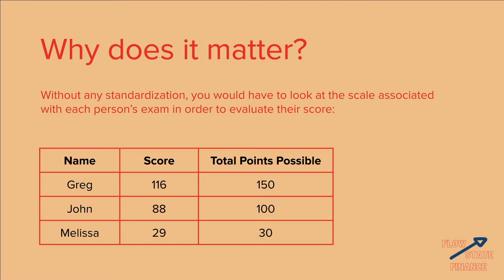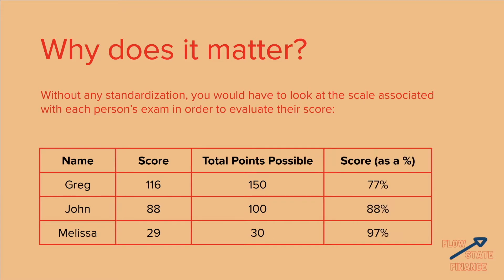So now let's standardize all these scores using a percentage. Greg got 116 out of 150, which is 77%. John got 88 out of 100, which is 88%. And Melissa got 29 out of 30, which is 97%.